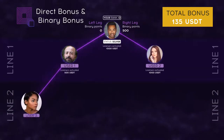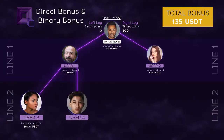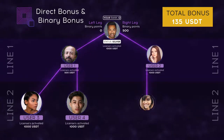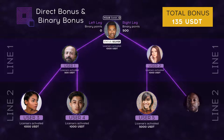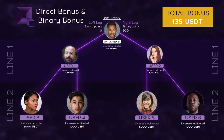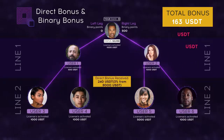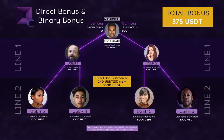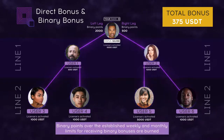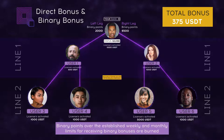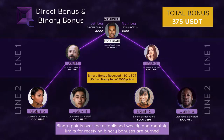By inviting new users, a Qubit Tech affiliate user develops their affiliate network and can access a Direct bonus from four linear levels. The number of levels to receive a Binary bonus is unlimited, which allows you not only to receive bonuses for your own career progression, but also benefit from the work done by your direct sponsor.